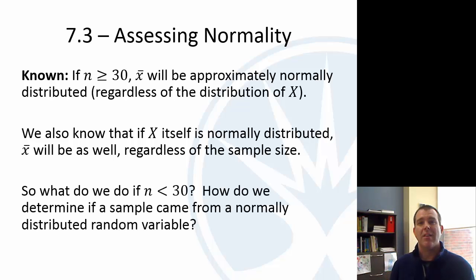The question is, what if I have a sample size less than 30? What if I have a sample size of 10 and I want to do some analysis, but that analysis needs the sample mean to be normally distributed? If I don't have at least 30, the only way the sample mean will be normally distributed is if the variable is. So what we need to do is determine if a sample came from a normally distributed population.